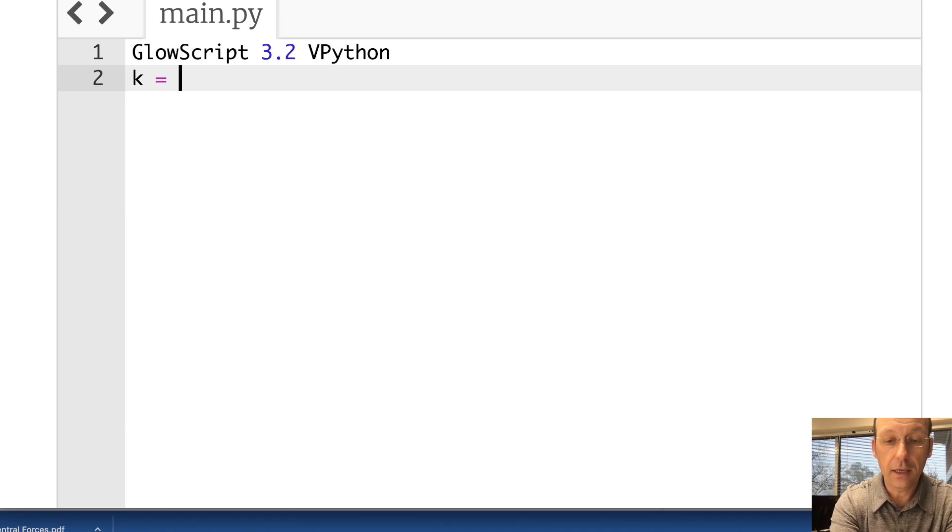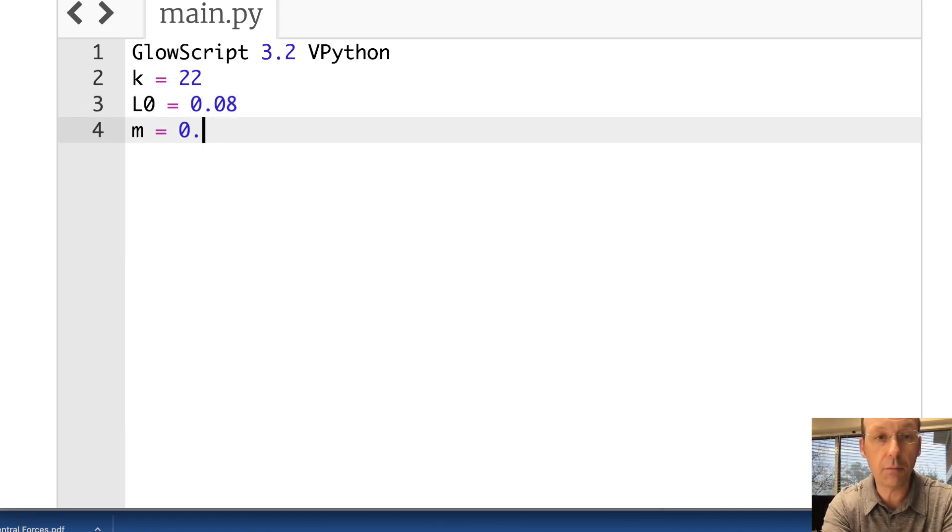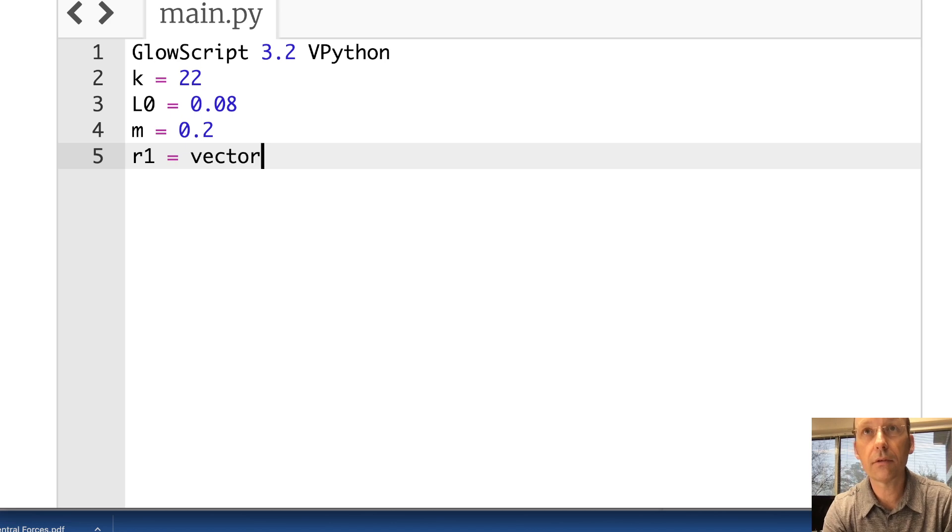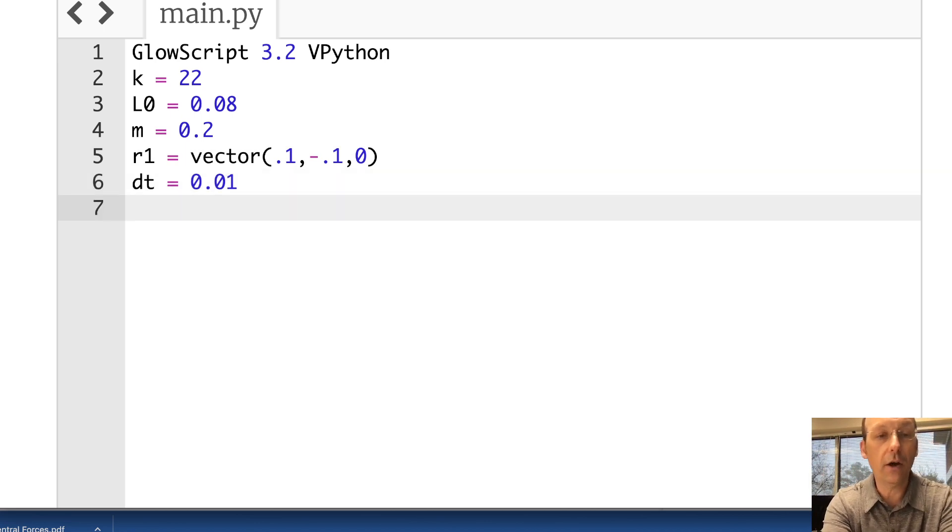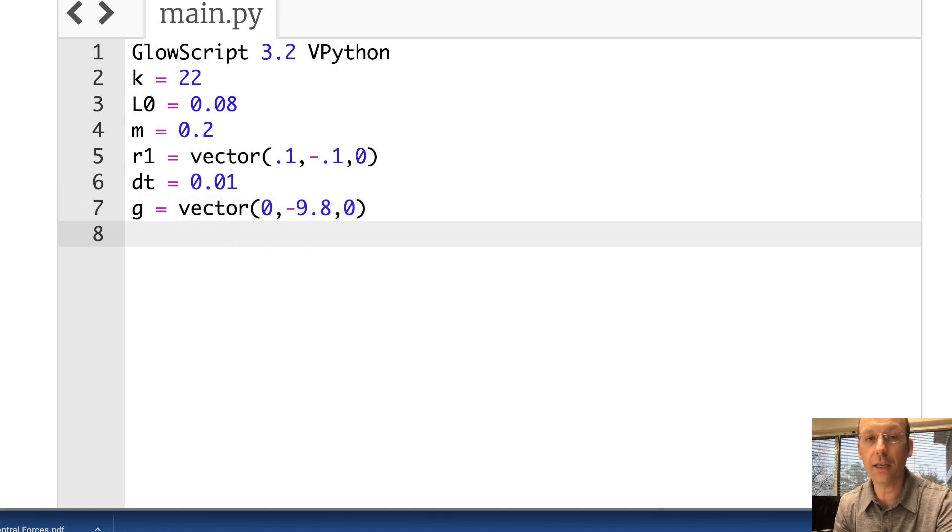So I have K equals 22. I'm not going to put the units. I don't really care about the units. L0 is equal to 0.08. M is 0.2. R1 is equal to the vector 0.1, negative 0.1, zero. And DT is 0.01. I need G is vector 0, negative 9.8, zero.